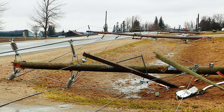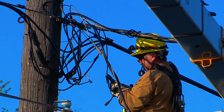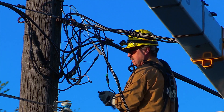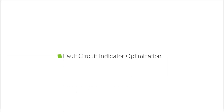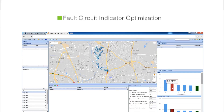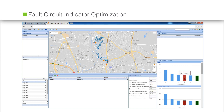Restoring power during an outage involves much more than sending a crew to repair the power lines. The fault circuit indicator FCI optimization application helps improve the outage restoration process by taking the guesswork out of FCI placement.